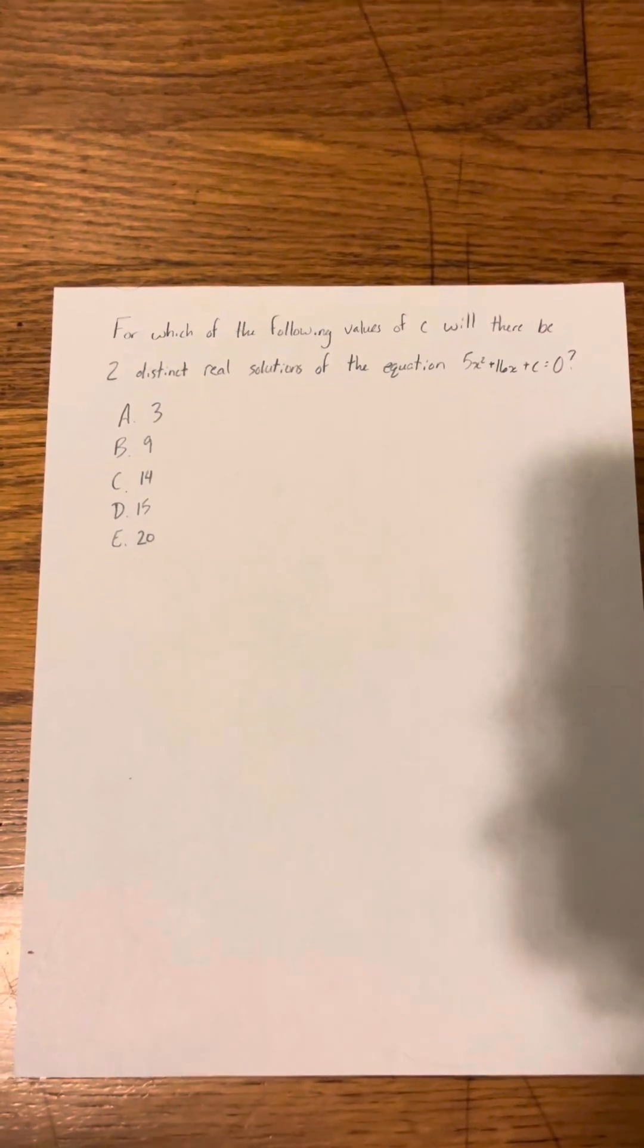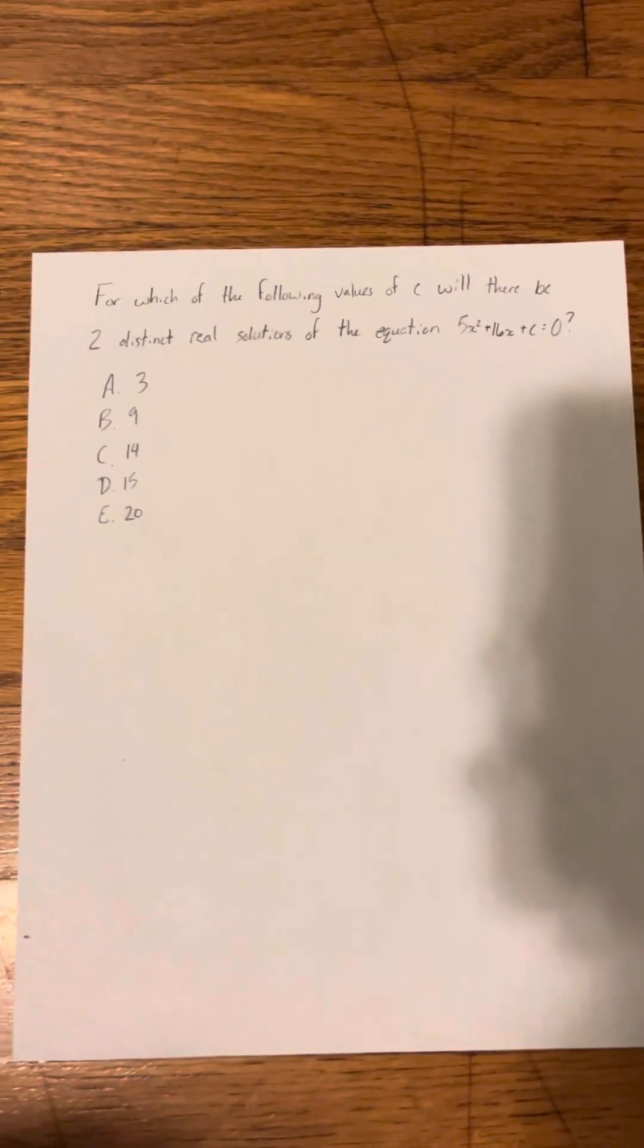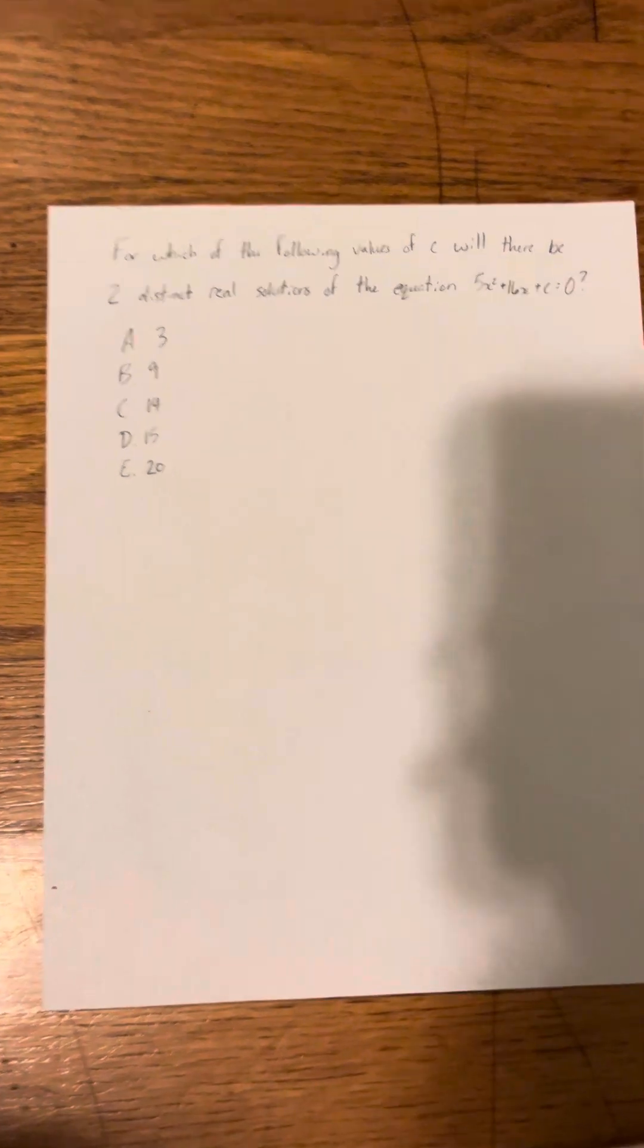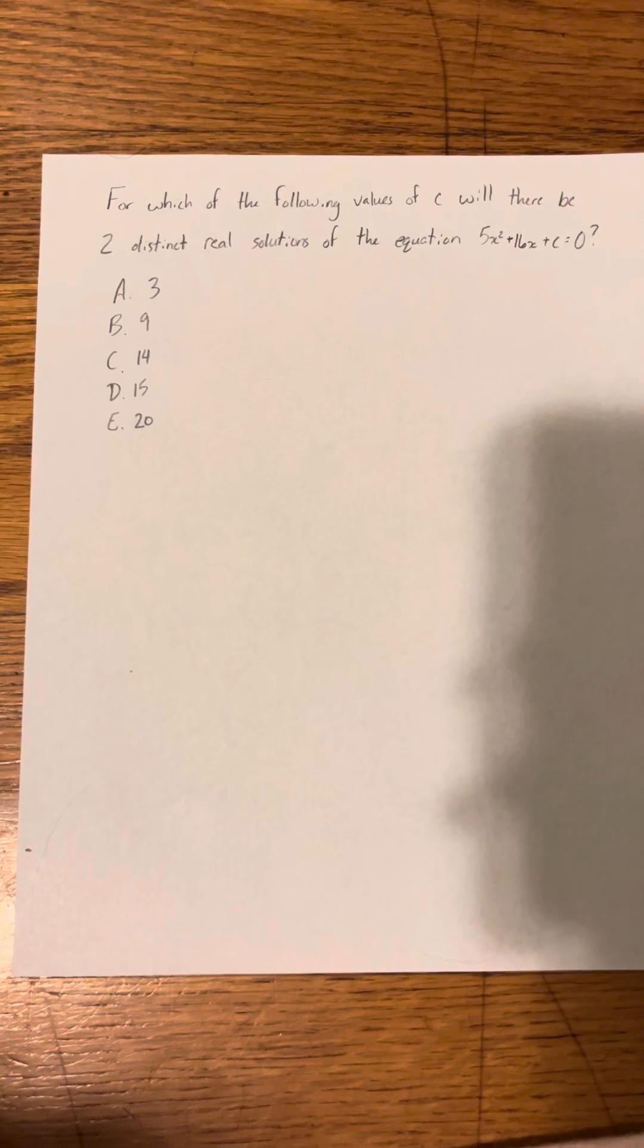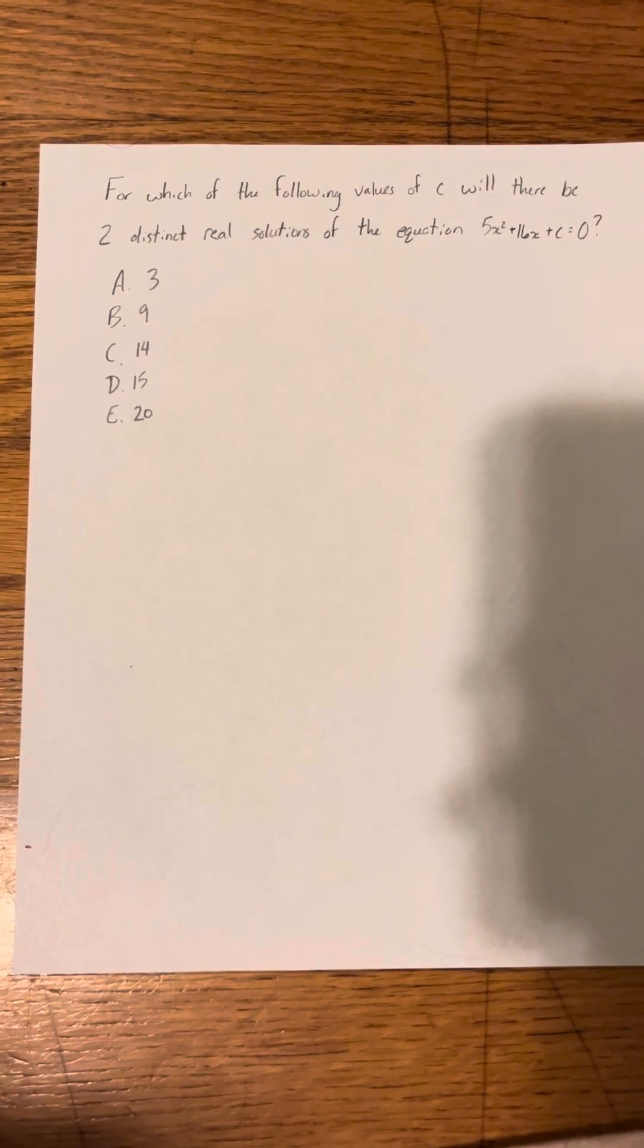All right, so this problem says, for which of the following values of C will there be two distinct real solutions of the equation 5x squared plus 16x plus C equals zero?